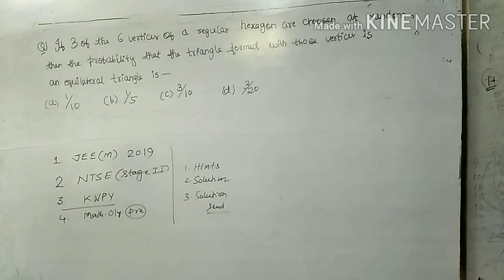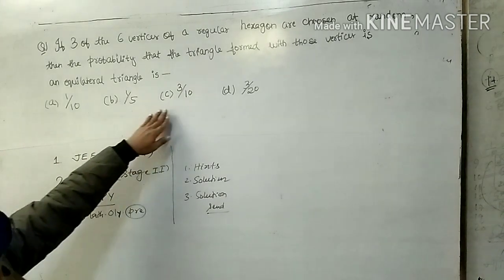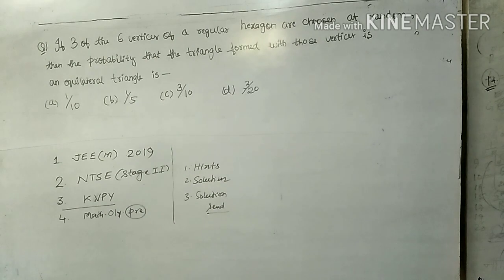Then the probability that the triangle formed with those vertices is an equilateral triangle is: first option 1 by 10, second option 1 by 5, third option 3 by 10, fourth option 3 by 20.